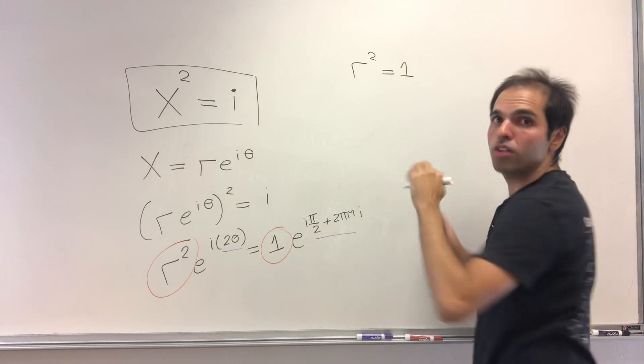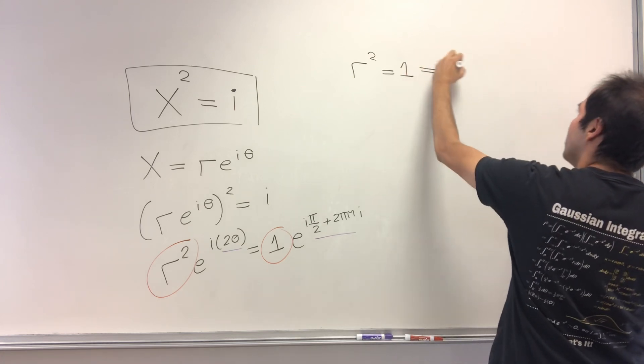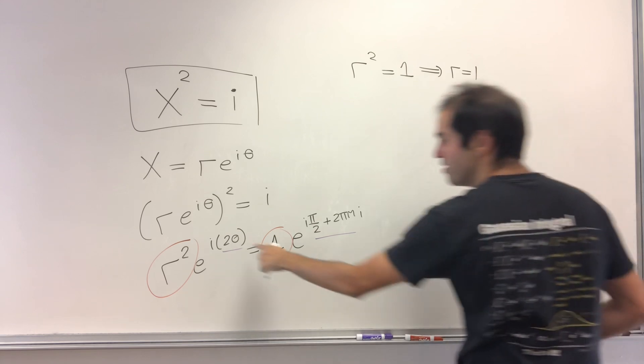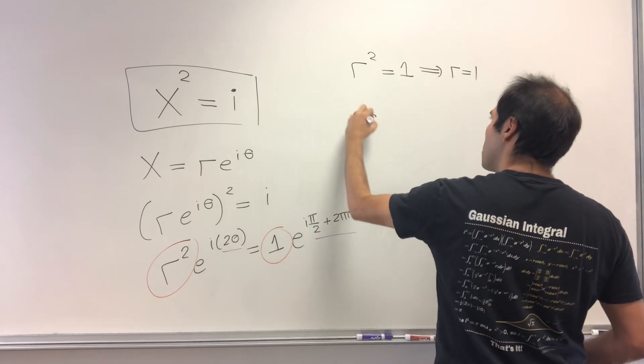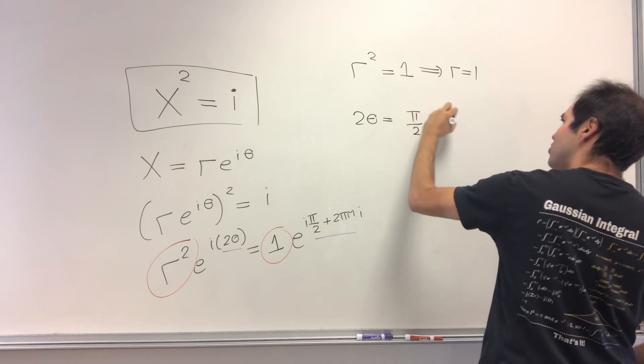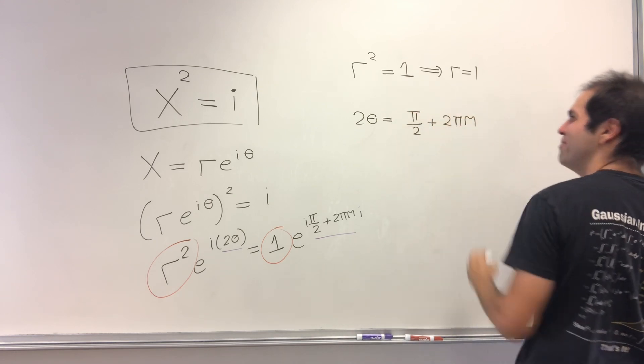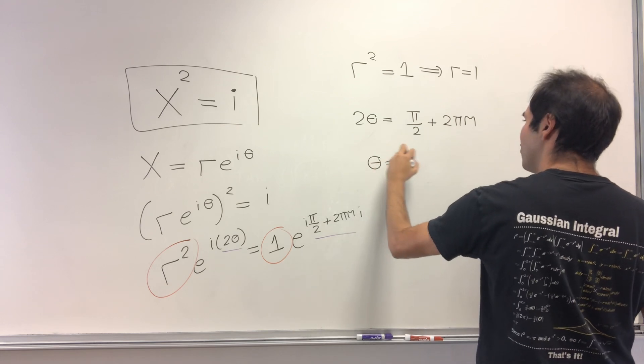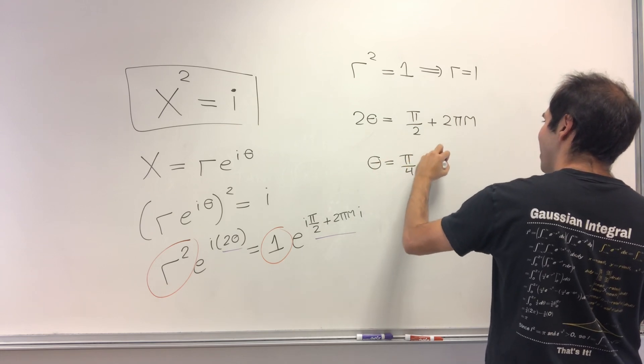But since r is a positive radius here, this gives you r equals 1. And similarly, 2θ is π/2 plus 2πm, and so θ is π/4 plus πm.